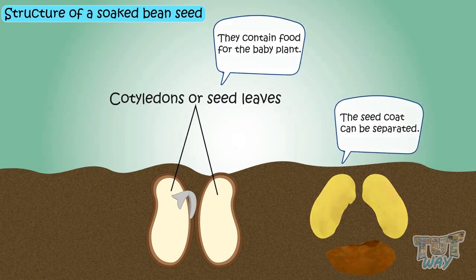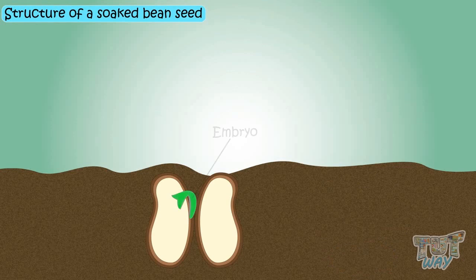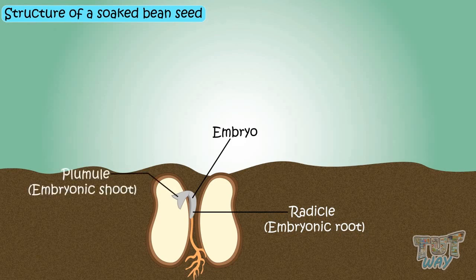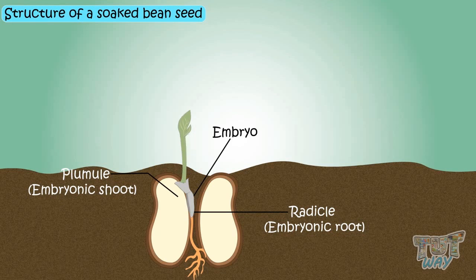Between the two cotyledons lies the embryo. The radicle is an embryonic root which grows and develops into the root system. The plumule is an embryonic shoot that grows and develops into the shoot of the plant.